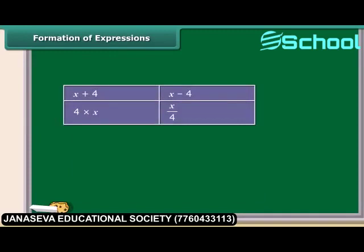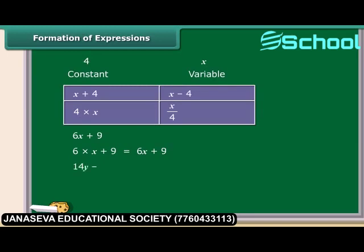Algebraic expressions are formed by combining variables and constants with the help of addition, subtraction, multiplication and division. Let us see how the algebraic expression 6X plus 9 is formed. First, multiply variable X with constant 6, then add a constant 9 to the product. Similarly, 14Y minus 30 is obtained by first multiplying Y by 14 and then subtracting 30 from the product. These expressions were obtained by combining variables with constants. You can also obtain expressions by combining variables with themselves or with other variables.